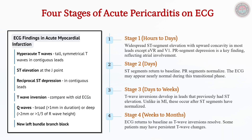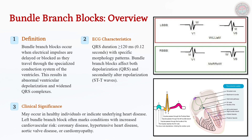Bundle branch blocks (BBBs) result from delayed or blocked conduction through the specialized ventricular conduction pathways, altering both depolarization and repolarization patterns. Right bundle branch block (RBBB) is often benign but may indicate pulmonary or structural heart disease, while left bundle branch block (LBBB) is more concerning, often signifying underlying ischemia, hypertension, or cardiomyopathy. BBBs widen the QRS complex (≥120 ms) and produce secondary ST-T wave changes, complicating ECG interpretation, particularly in the context of suspected myocardial infarction.